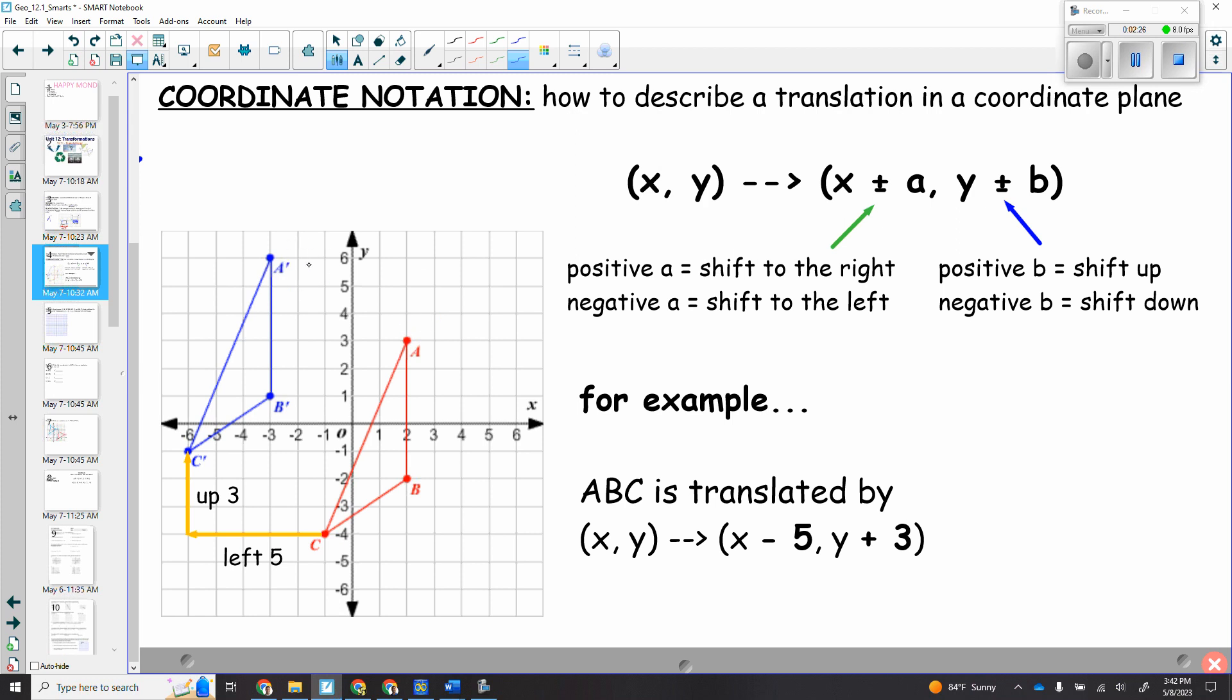That just means that you've done something to A and now it's A prime. So it has been moved, okay? All right. Let's see if we can get into today's topic, which is over translations. A transformation that moves every point in a figure the same distance and the same direction. Sometimes they refer to this as a slide. So let's say it is on a coordinate like this. Coordinate notation is how you describe a translation on a coordinate plane.